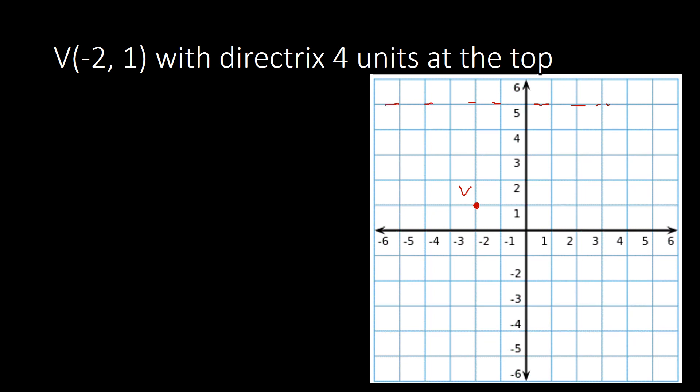We count how many units the directrix and vertex are away from each other. Counting from the vertex upward: 1, 2, 3, 4 — that's 4 units, so a = 4. So we have h = −2, k = 1, and a = 4.